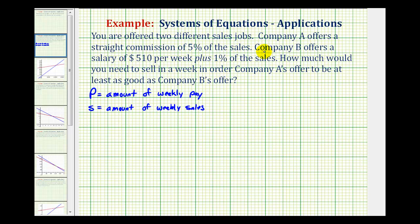And now we'll have two equations, one equation for the pay from company A and a second equation for the pay from company B. Company A offers a straight commission of 5% of the sales, which means the pay is going to be equal to 5% times the amount of weekly sales. So for our equation we'll convert the percent to a decimal, so we'll have 0.05 times S. We'll call this equation A.